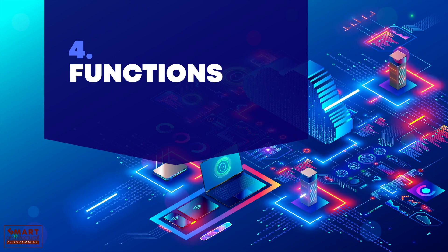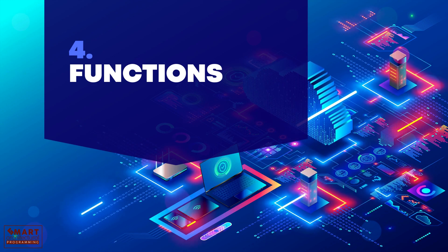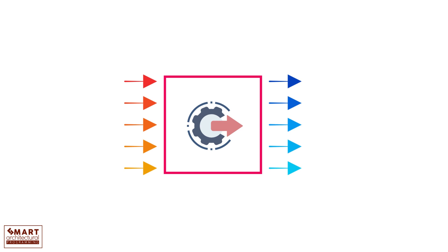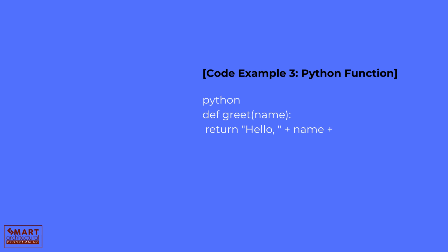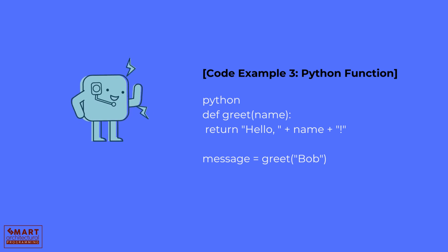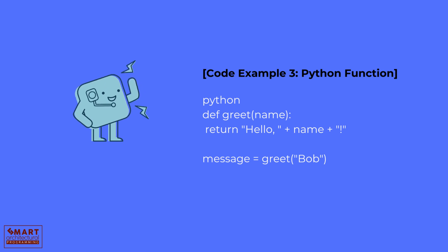Functions are like mini programs inside our program. They take inputs, perform actions, and produce outputs. Functions make our code more organized and reusable. In Python: def greet(name), return hello plus name. Message equals greet(Bob). Here, we define a greet function that takes a name as input and returns a greeting, then call this function and store the result in the message variable.